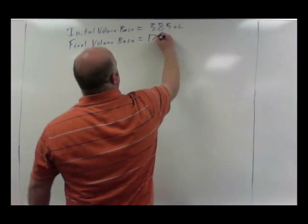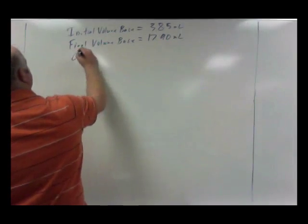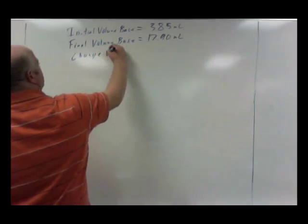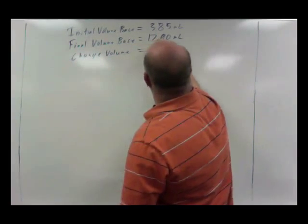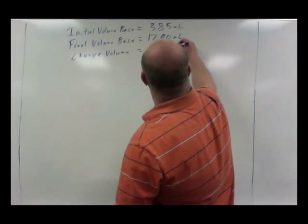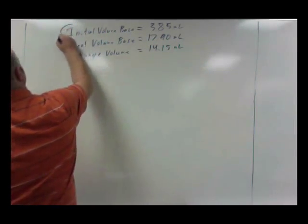Was 17.90 milliliters. So what is our change in volume? 14.15 milliliters. Okay, so this is all the stuff that was in the burette.